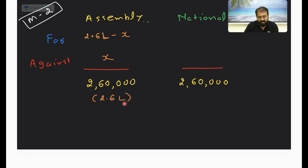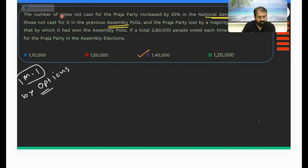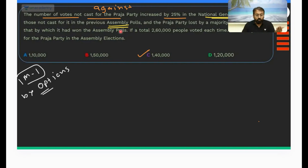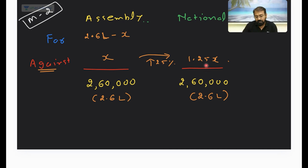The number of votes not cast for the party — meaning votes against — has increased by 25% in the national general election over those in the previous assembly polls. So compared to assembly polls, votes against become 1.25x. Therefore, votes for in the national general election will be 2.6 lakh minus 1.25x.